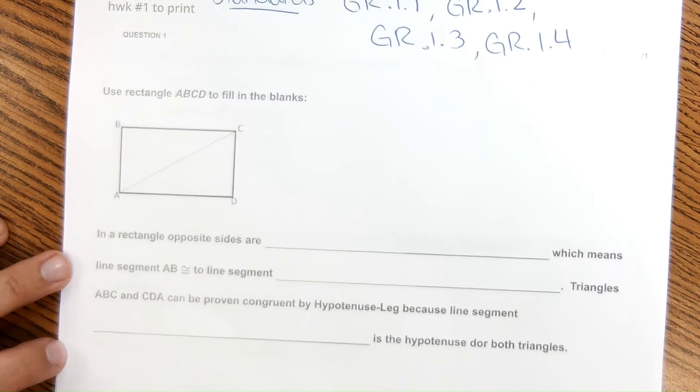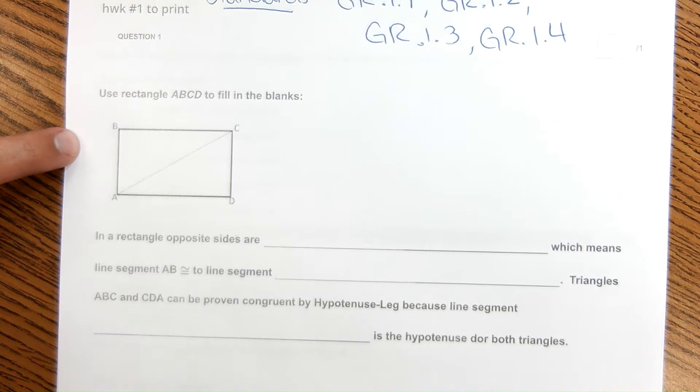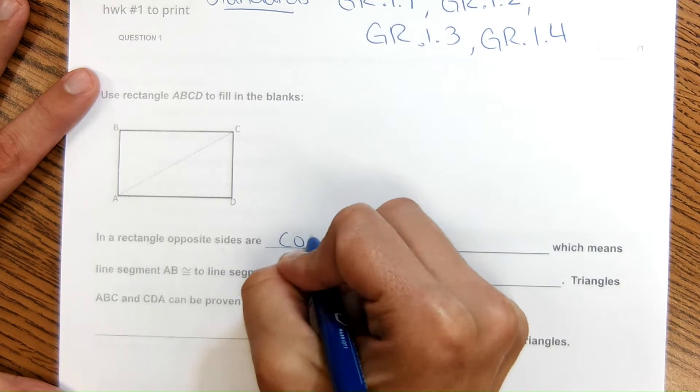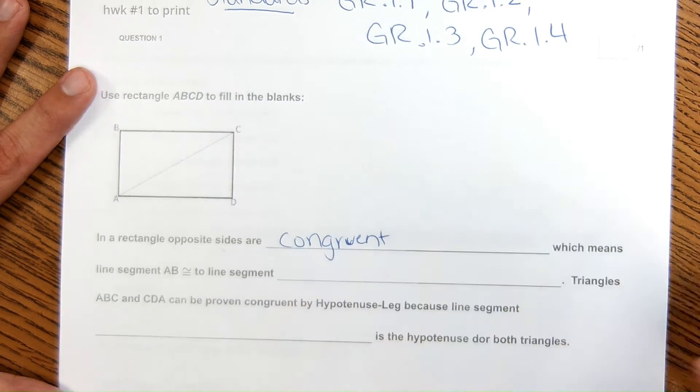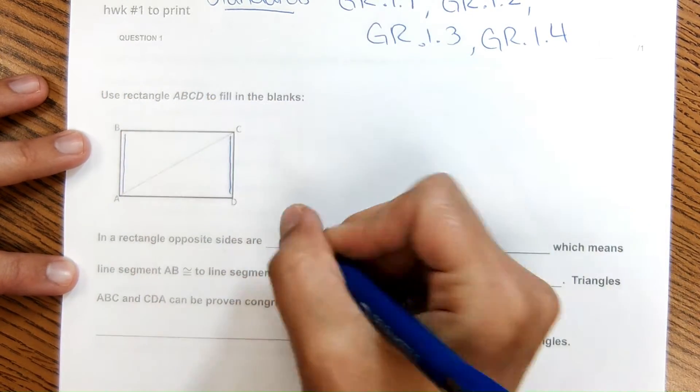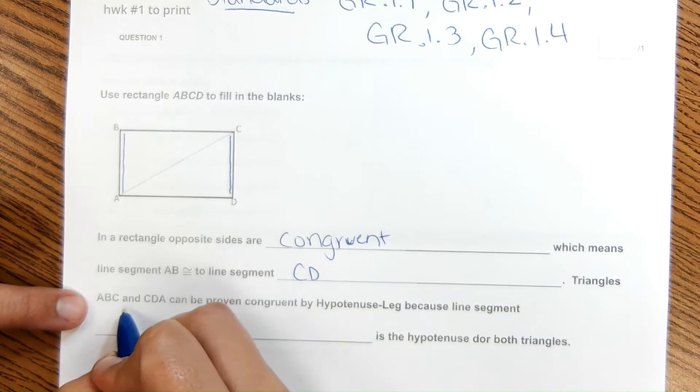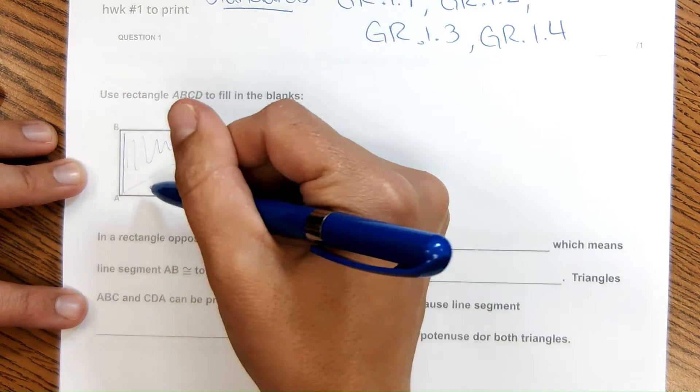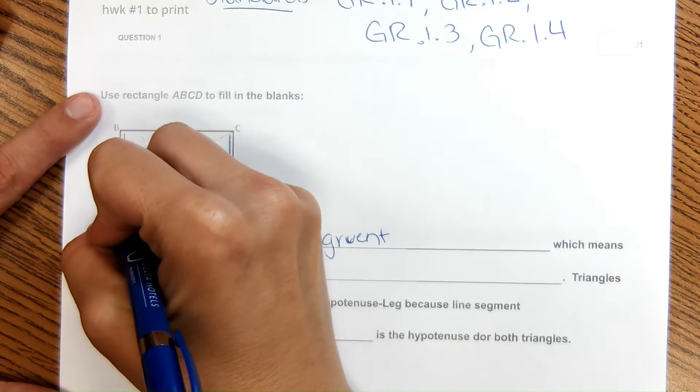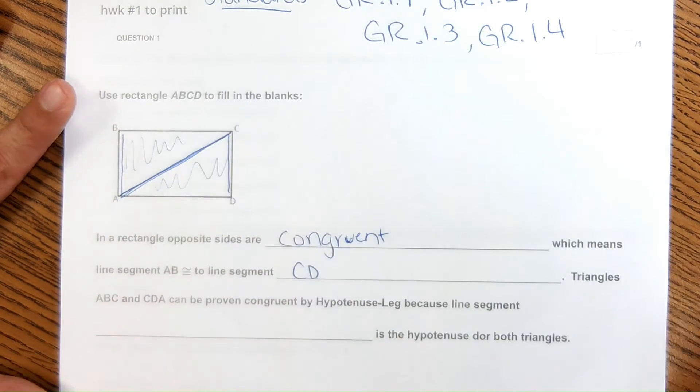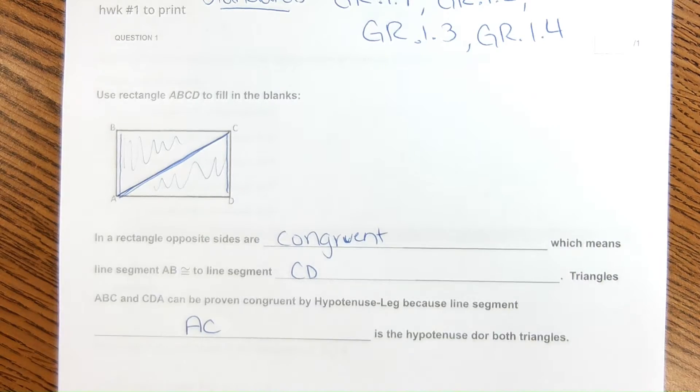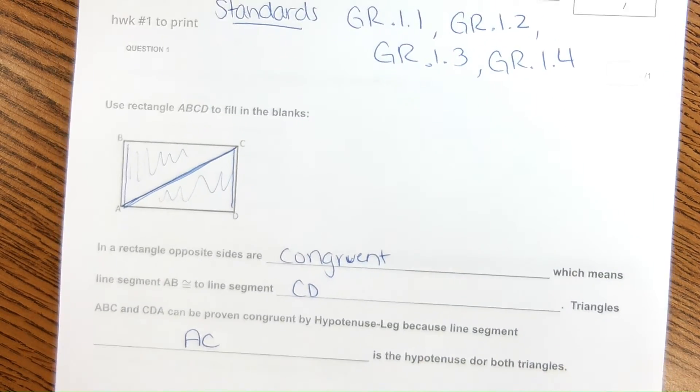The first sample question says use rectangle ABCD to fill in the blanks. Rectangles opposite sides are congruent, which means that line segment AB right here is congruent to line segment CD. Triangles ABC and CDA can be proven congruent by hypotenuse leg because line segment AC is a shared side, and that's a hypotenuse of both. So line segment AC is a hypotenuse of both triangles.